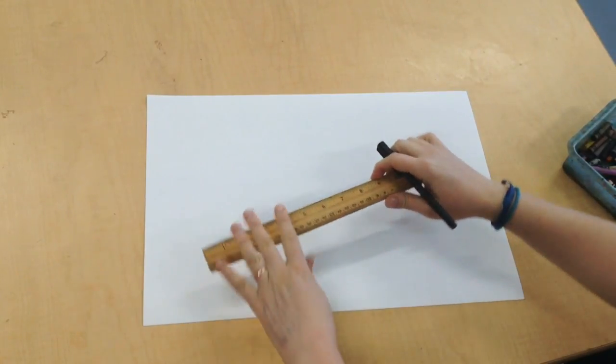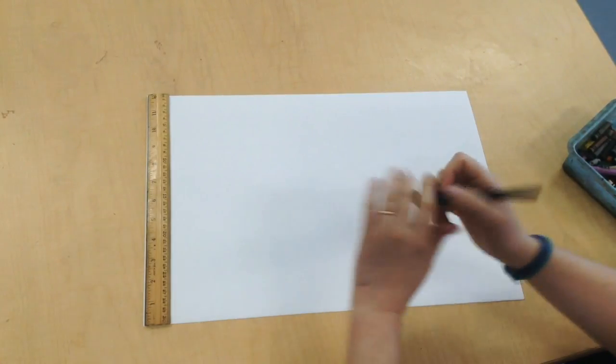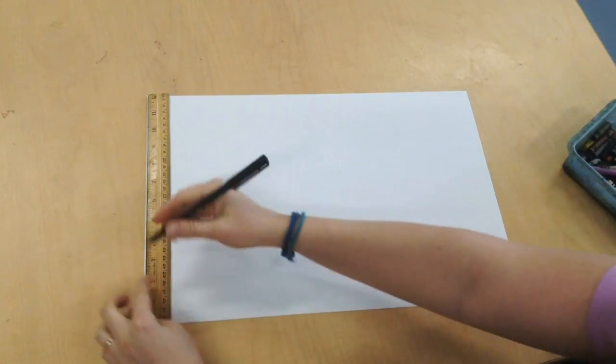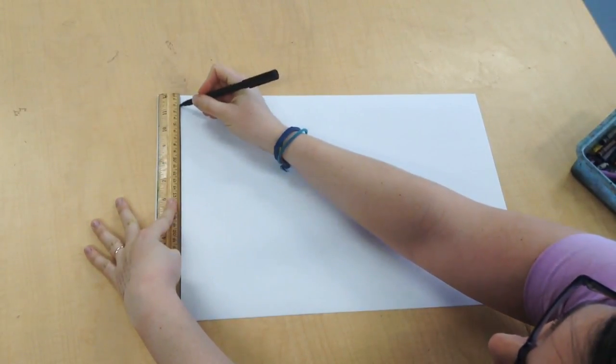Okay friends, to get started with our Kente cloth, first thing we're going to do is take our ruler, line it up at the edge of our paper, and carefully draw a straight line.